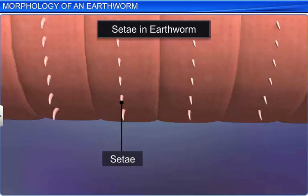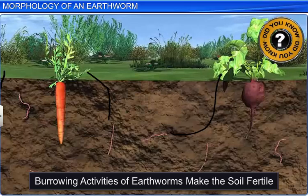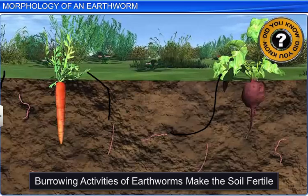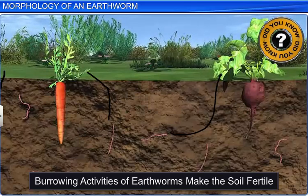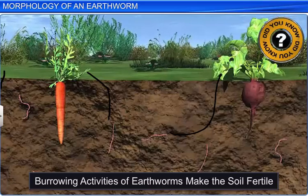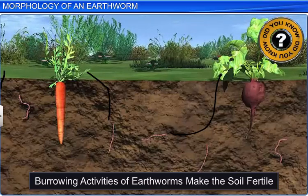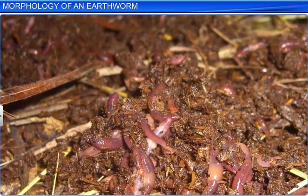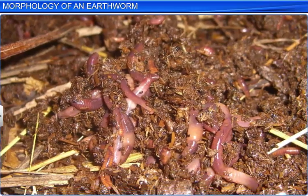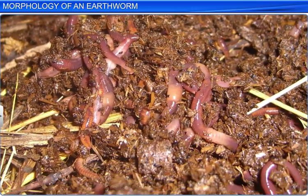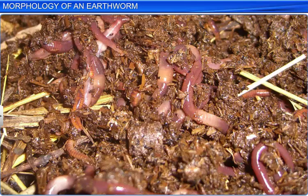Earthworms are known as friends of farmers because their burrowing activities make the soil porous and aerated, which facilitates the development of roots in plants. They also play an important role in decomposing organic matter to humus, improving soil fertility. In recent years, earthworms have been extensively used for vermicomposting.